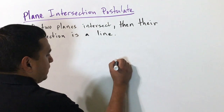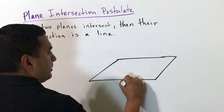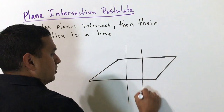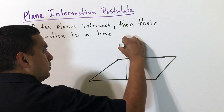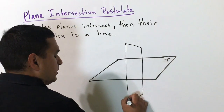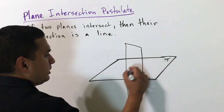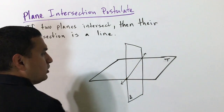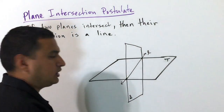The plane-intersection postulate says if two planes intersect, then their intersection is a line. To draw this, I have a parallelogram going one direction and another one going vertically. We'll call one plane T and the other plane S. When these two planes cross, their intersection is a line — we'll call it line L — cutting through both planes. So line L is the intersection of plane S and plane T.